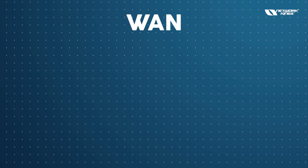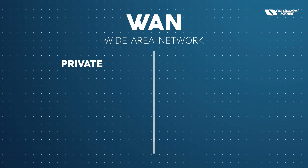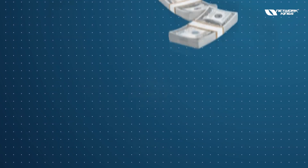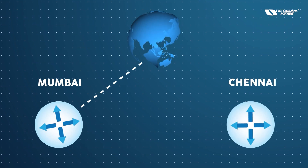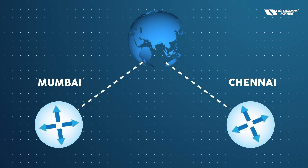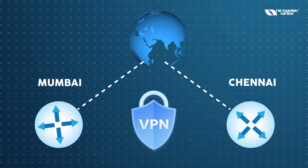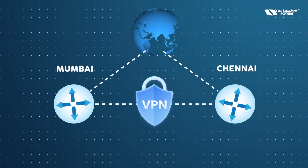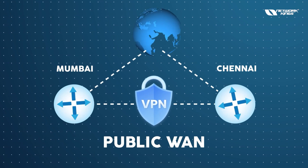When Mumbai and Chennai are connected together, that is a Wide Area Network. WAN doesn't mean connecting just two locations — WAN can be of two types: private and public. Public means the internet, and private means a dedicated private connection. Mumbai is connected with the internet, Chennai is also connected with the internet, and with the help of the internet you are connecting both locations — that is called a VPN, which is a public WAN.